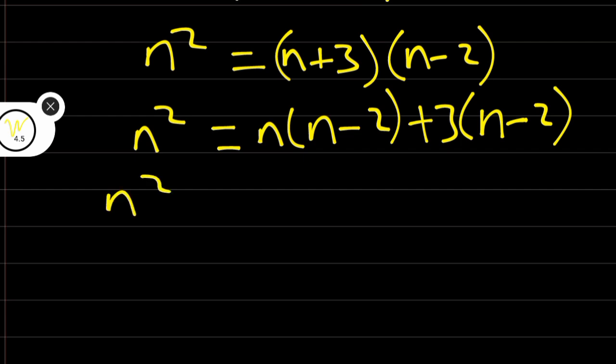Therefore, we are going to have n squared is equal to n squared minus 2n plus 3n minus 6.